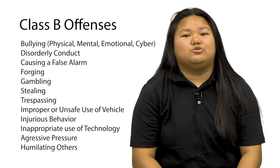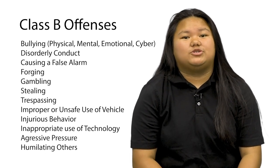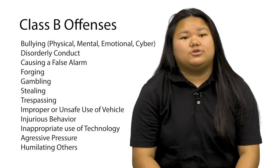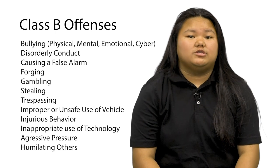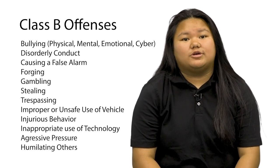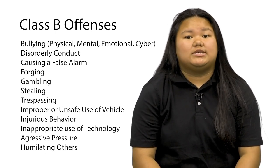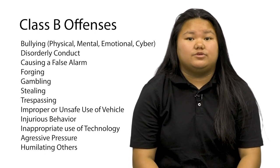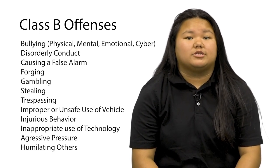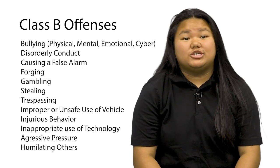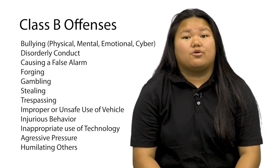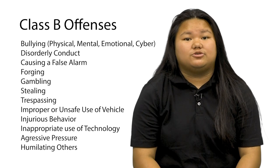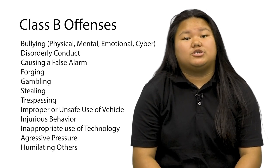Class B offenses include a variety of unlawful conduct where a police report is filed as needed. These offenses include bullying — either physical, mental, emotional, or cyber — disorderly conduct, causing a false alarm, forging a document or signature, gambling, stealing items from others, trespassing, improper or unsafe use of a vehicle on and within the proximity of campus, injuries or injurious behavior, and inappropriate or questionable uses of internet materials or equipment.